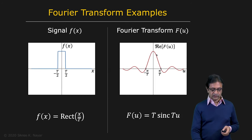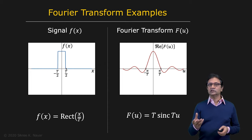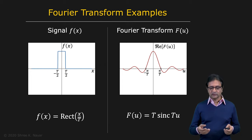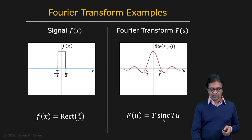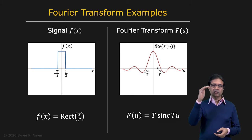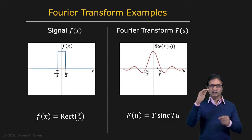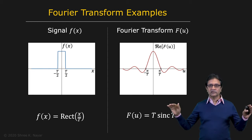Here is the rectangular function, also referred to as the pulse. It has a width of T, going from −T/2 to T/2. The Fourier transform of a rectangular function — which is the 1D version of the box filter we discussed in the previous lecture — is the sinc function: T·sinc(Tu), where sinc(Tu) = sin(Tu)/(Tu). This function starts with a maximum value at frequency zero, then tapers down with oscillations that dampen over time — a ringing effect.